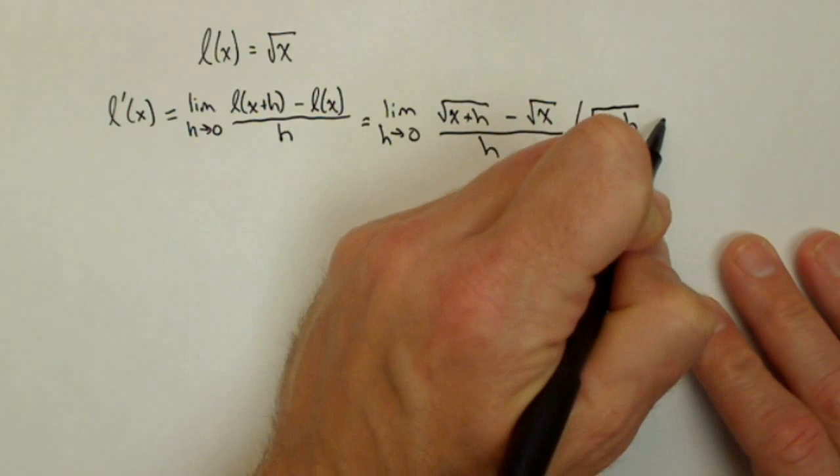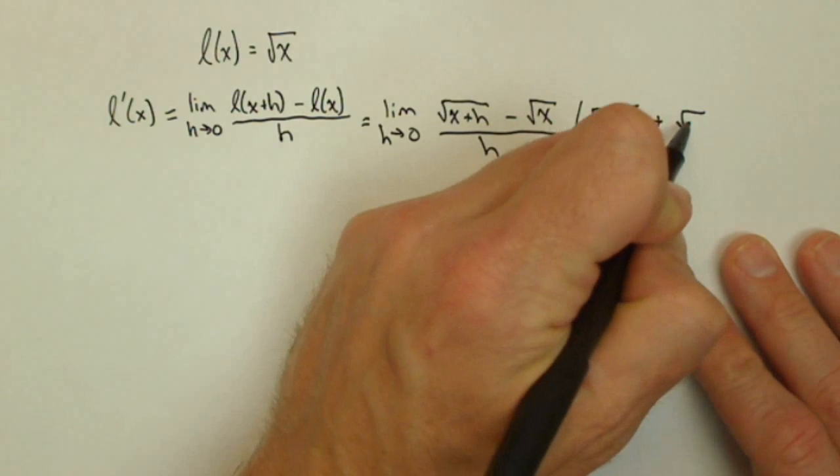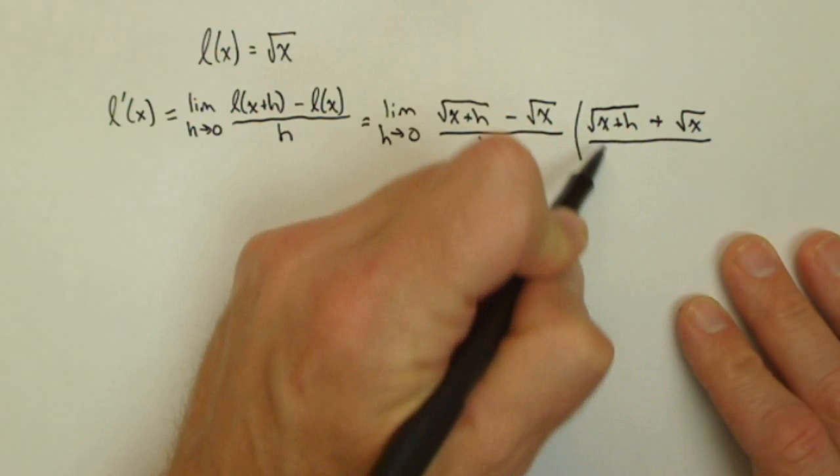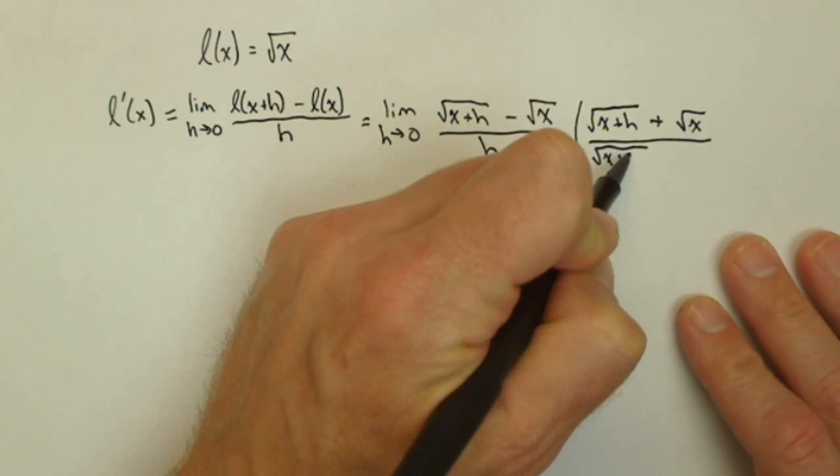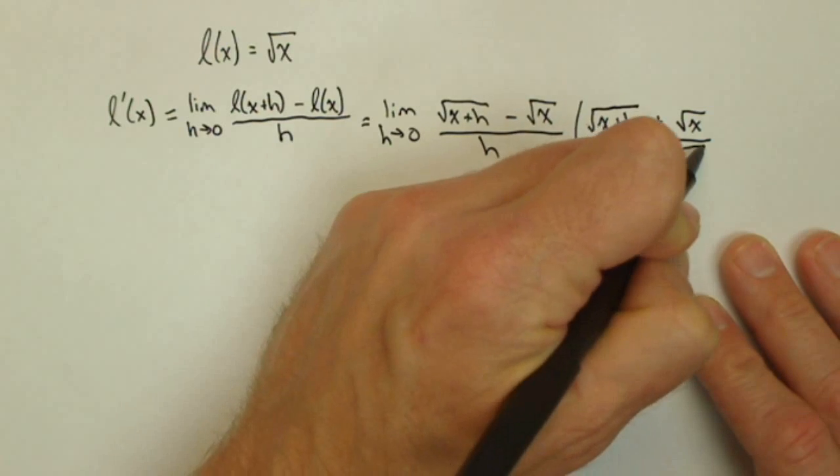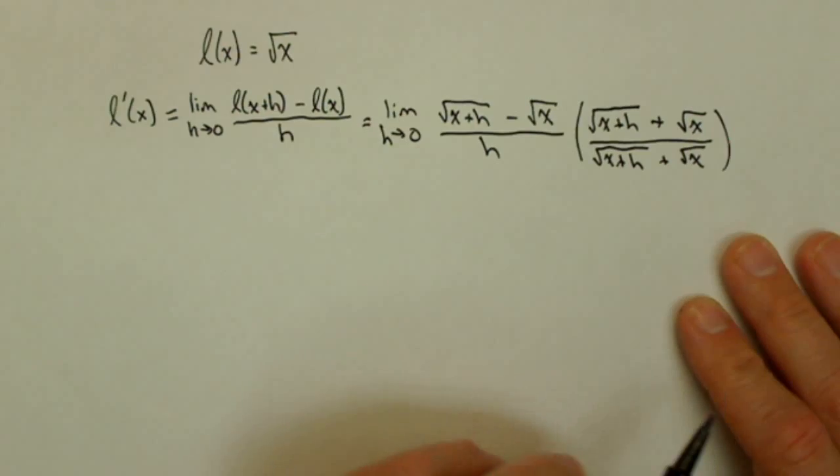So the conjugate square root of x plus h plus square root of x and we'll do the same thing on bottom because we can't change what we have because now we're just multiplying by one.